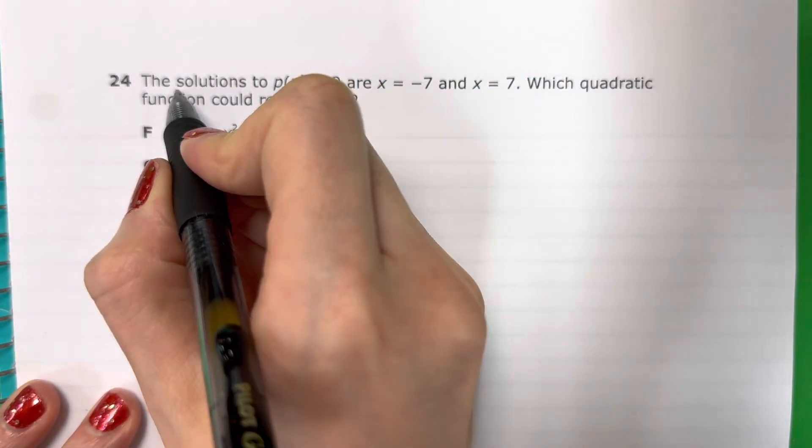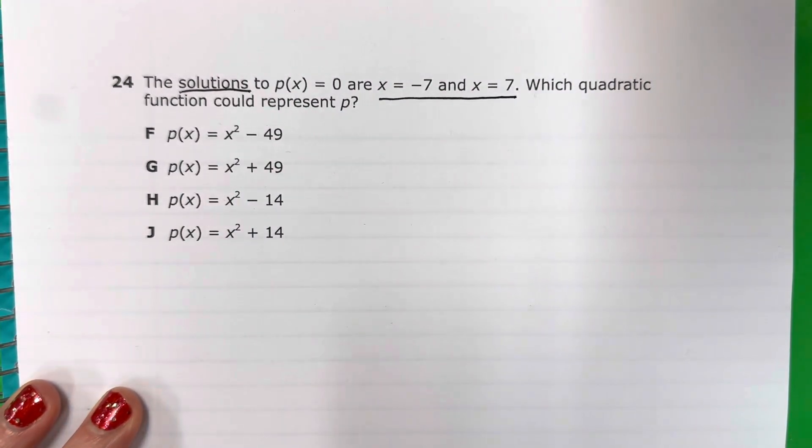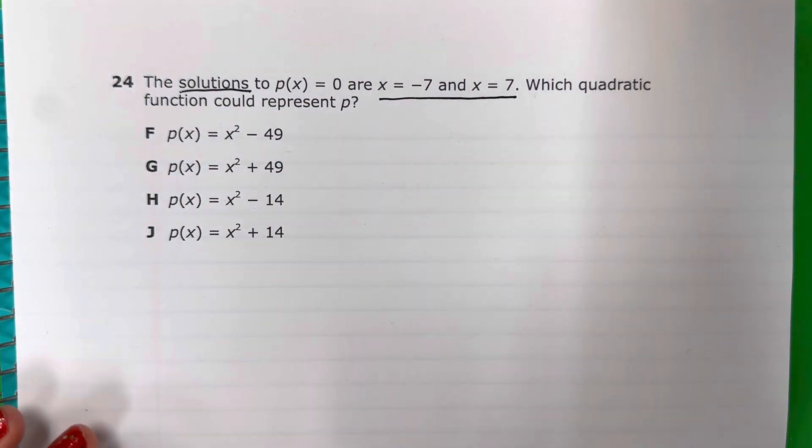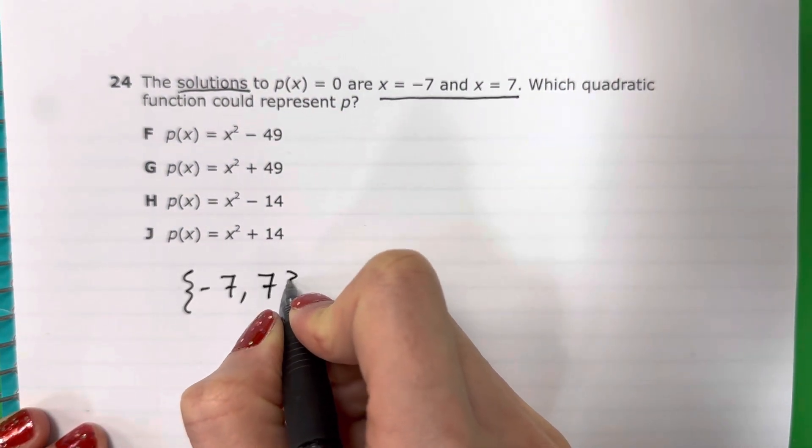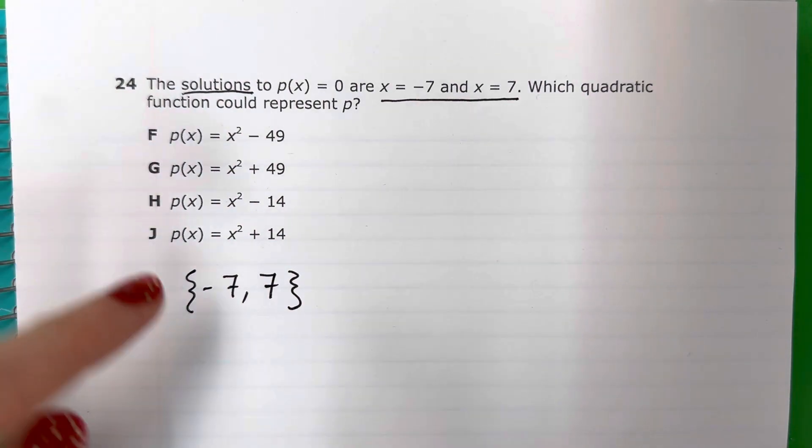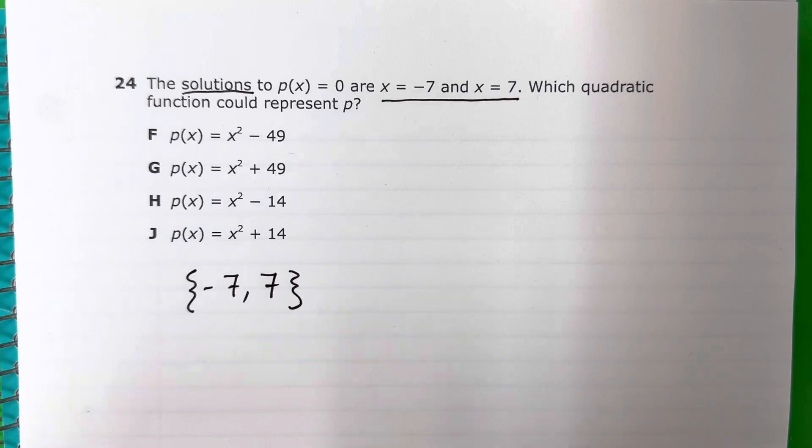Okay, so basically the solutions are negative 7 and 7. I need to see which one will give me this. I'm going to show you two ways. Voy a mostrarles dos maneras.